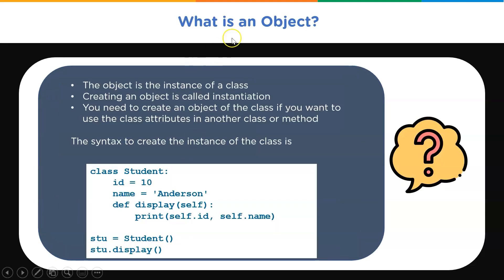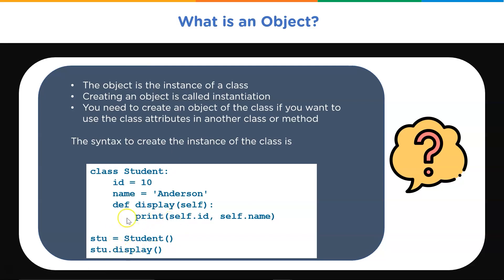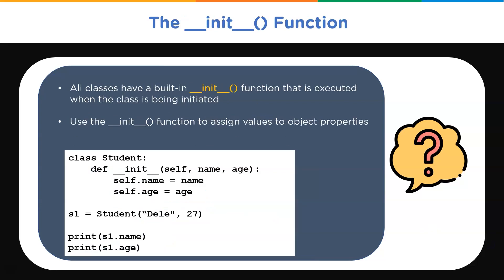An object is also called an instance of a class, and the process of creating this object is called instantiation. You need to create an object of the class if you want to use the class attributes in another class or method. The procedure to create an object is similar to a function call. We create an object called 'stu' by calling the class Student using parentheses, and then call the display function using the object name prefix.